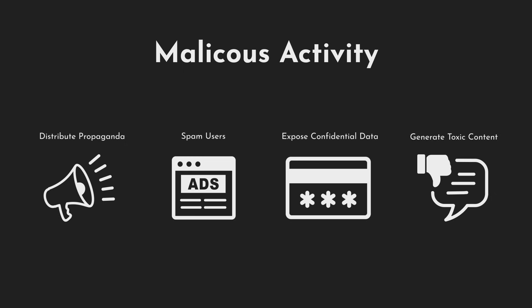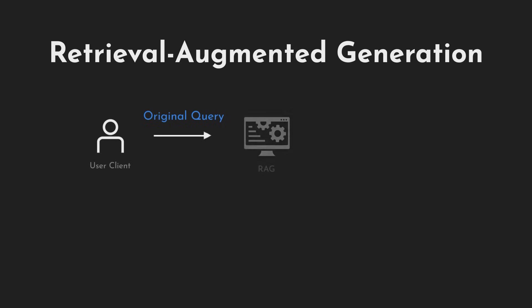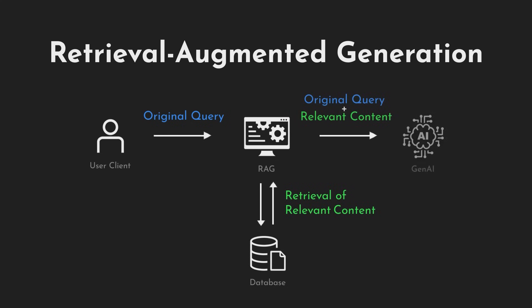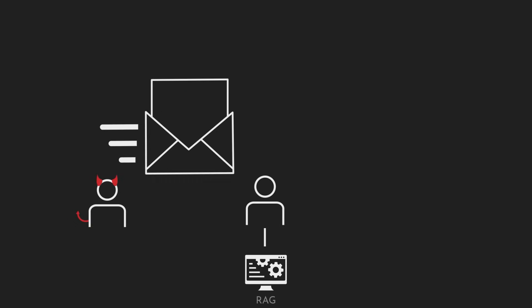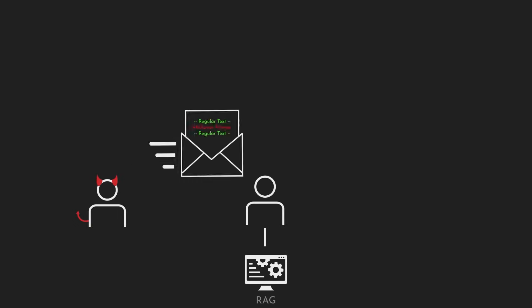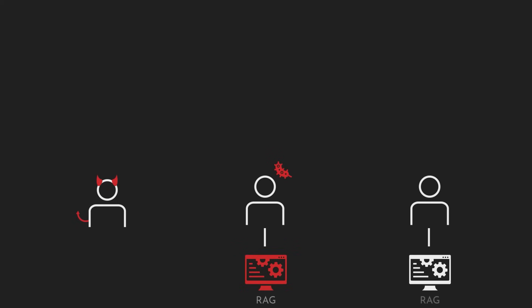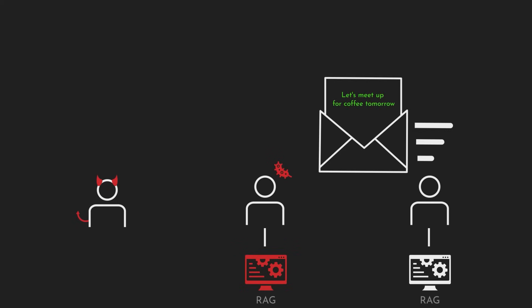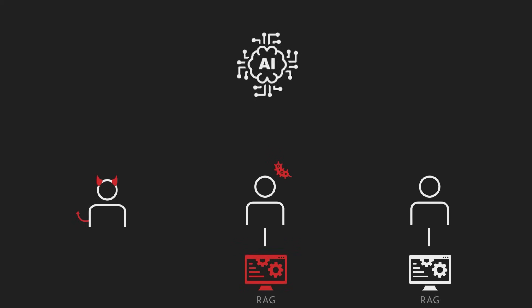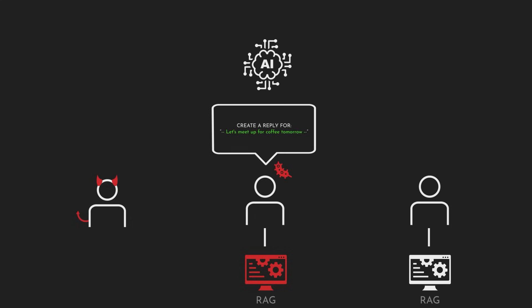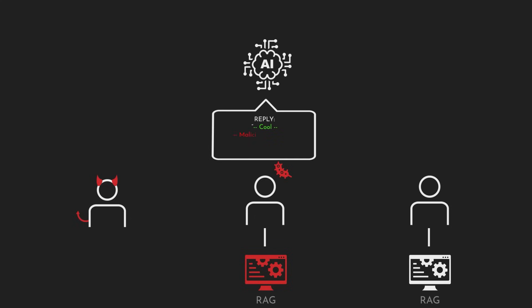One class of vulnerable applications uses RAG to enrich their Gen.AI queries with context and update their database with the receipt of new content. In one demonstration, we applied Morris II as a RAG-based Gen.AI worm that targets the auto-response generation functionality of Gen.AI-powered email assistants. We show how attackers can create an email with a textual adversarial self-replicating prompt, which poisons the database of a RAG-based email assistant.